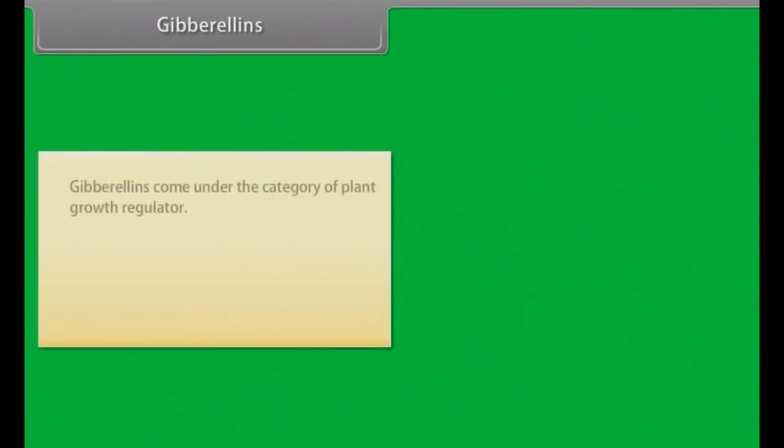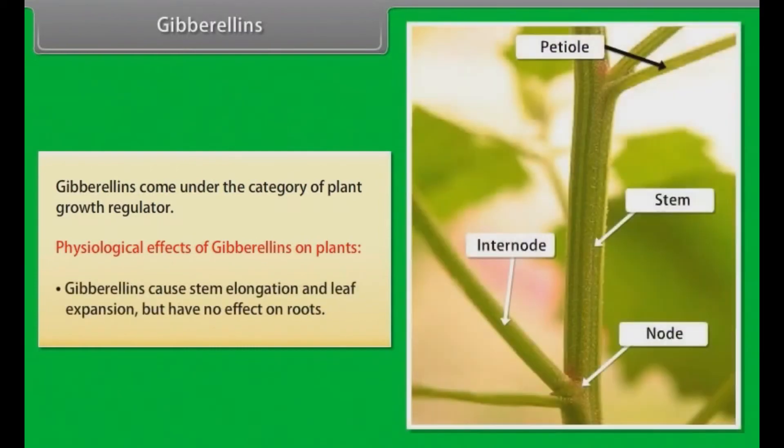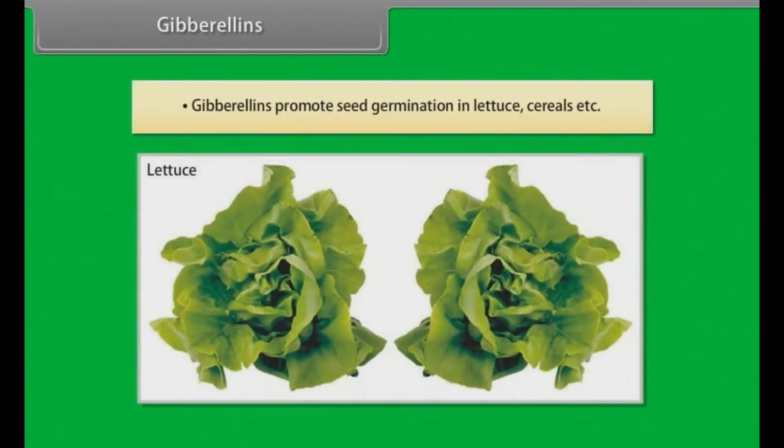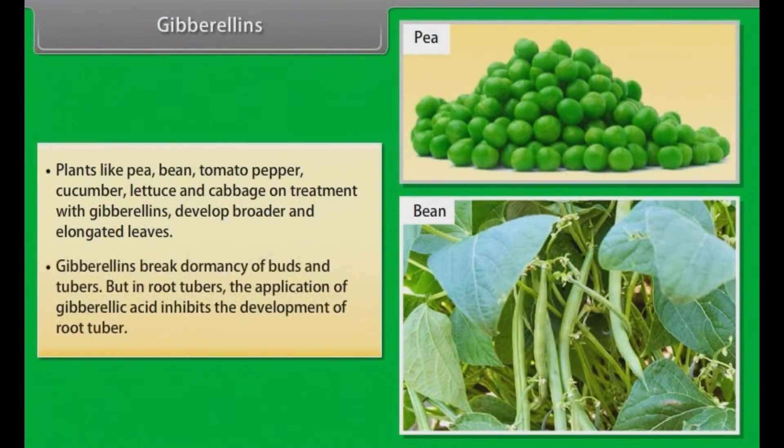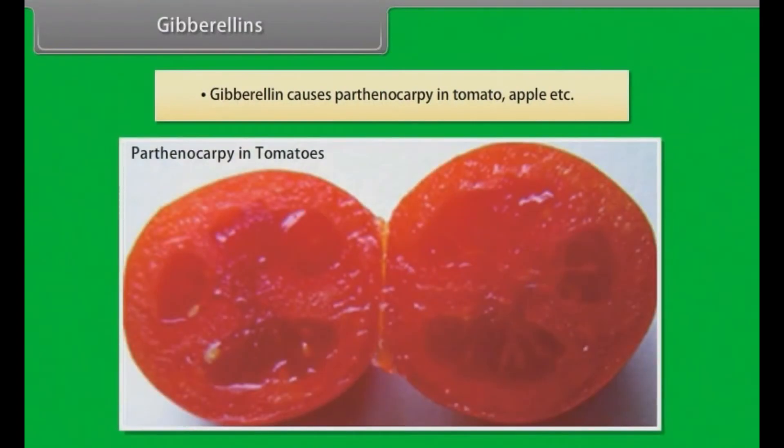Gibberellins. Gibberellins come under the category of plant growth regulator. Physiological effects of gibberellins on plants: gibberellins cause stem elongation and leaf expansion but have no effect on roots. Gibberellins promote seed germination in lettuce, cereals, etc. Plants like pea, bean, tomato pepper, cucumber, lettuce and cabbage on treatment with gibberellins develop broader and elongated leaves. Gibberellins break dormancy of buds and tubers, but in root tubers the application of gibberellic acid inhibits the development of root tuber. Gibberellins cause parthenocarpy in tomato, apple, etc.